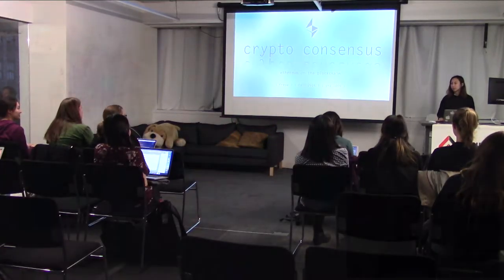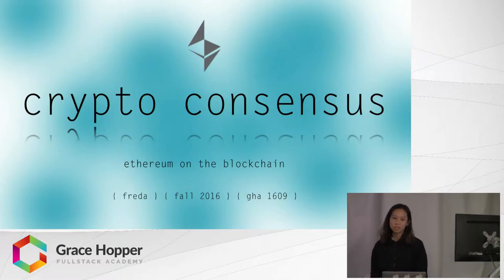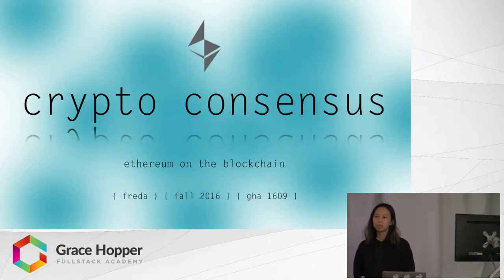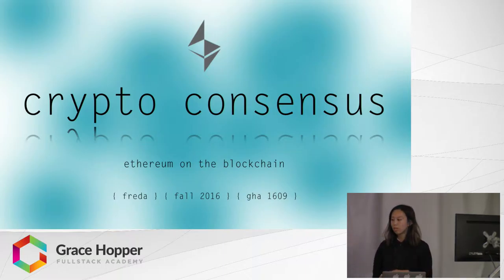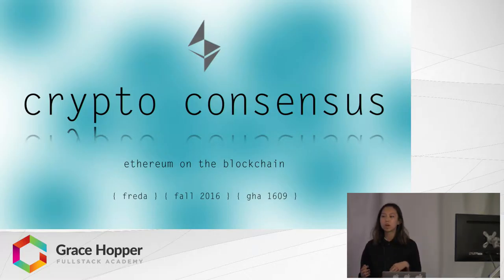Hi, my name is Frida. I'm from the Grace Hopper 1609 cohort and today I'll be talking about the blockchain and hopefully just demystifying it a little bit. The title of my talk is 'Crypto Consensus' and I chose that because there are a couple different ways you could interpret what that means. I'm also going to show an example of a democratic consensus taken from real life and we're going to try to recreate that in code.